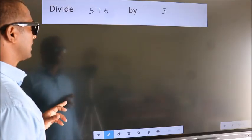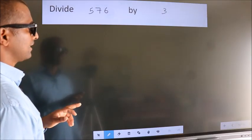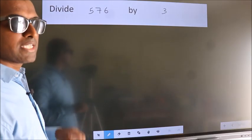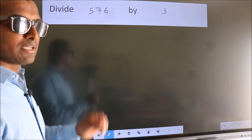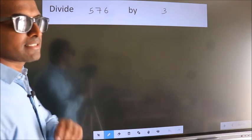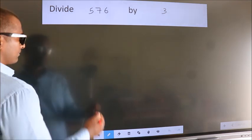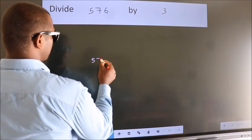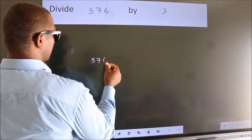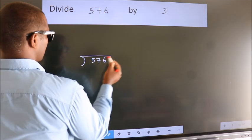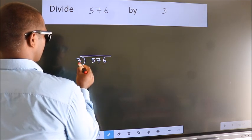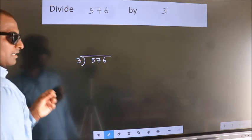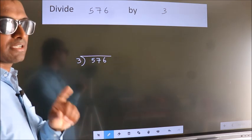Divide 576 by 3. To do this division, we should frame it in this way — 576 here, 3 here. This is your step 1.